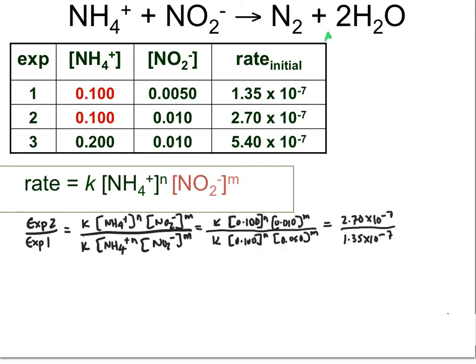Now that we've plugged in the values into the rate laws associated with each experimental data set, we'll look at what variables cancel. The constants k cancel, and the concentrations associated with our NH4⁺ ion cancel, leaving us with the data for NO2⁻. Doing the math: 0.010 divided by 0.005 gives us 2^m, and 2.70×10⁻⁷ divided by 1.35×10⁻⁷ gives us 2. So 2 to what power of m gives us 2? M equals 1 — the reaction is first order with respect to NO2⁻.